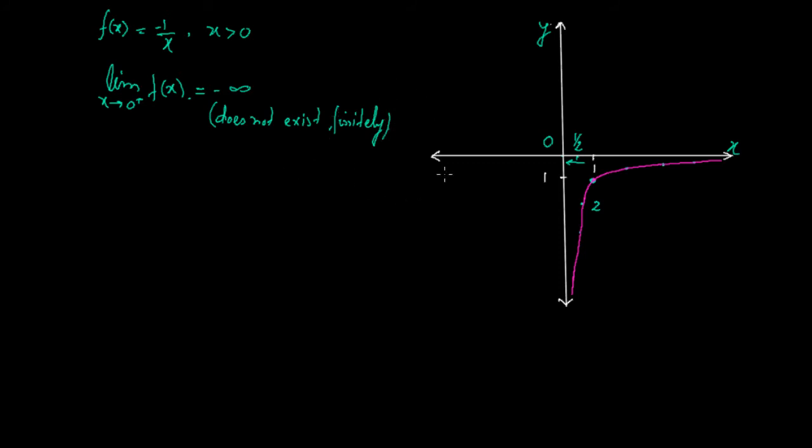This gives a clear explanation of Case 2, when the right-hand limit does not exist. Now let me take Case 3: when the limit as x approaches a from the negative side of f(x) does not exist.